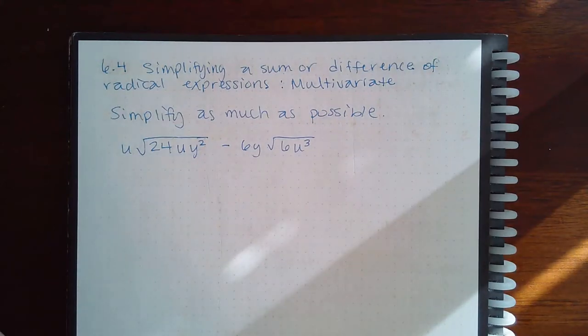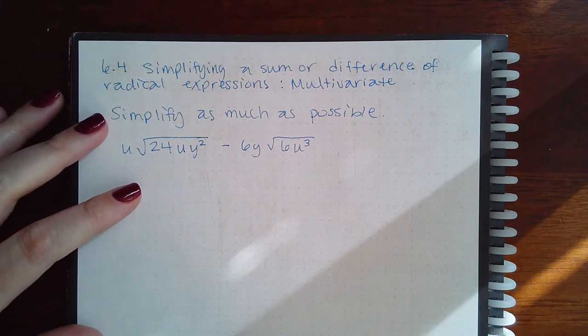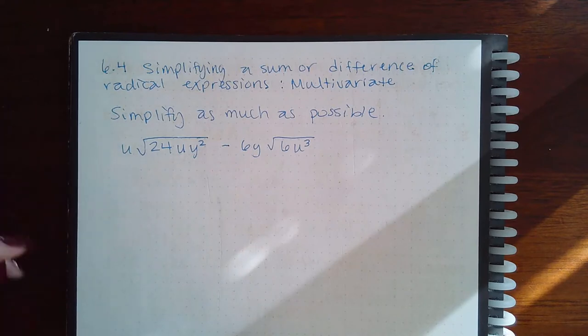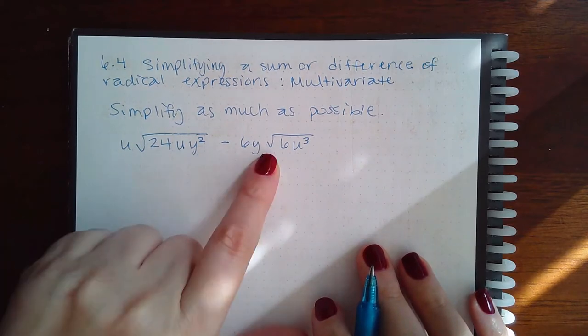Here we have 6.4 simplifying a sum or difference of radical expressions multivariate, simplifying as much as possible. We're going to do everything exactly the same, the only thing different is that you have some other variables.